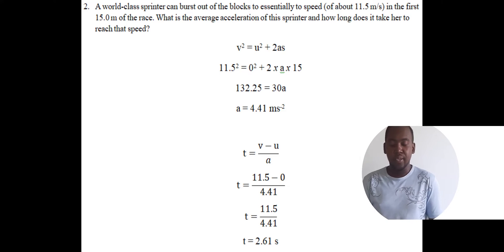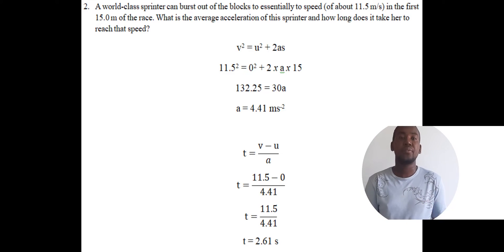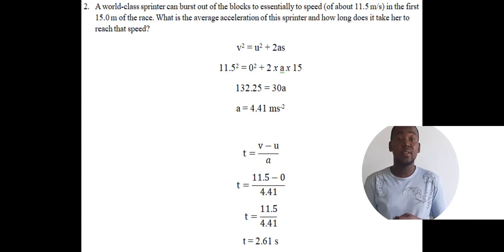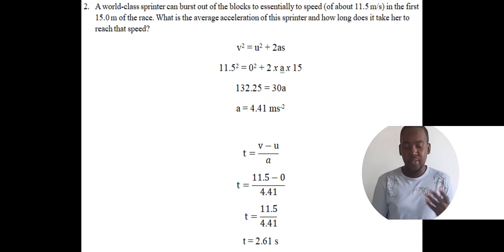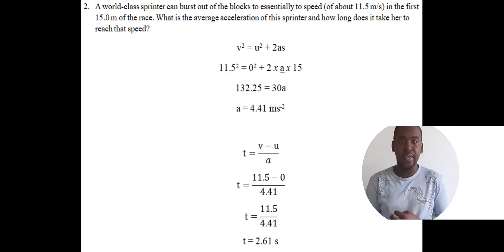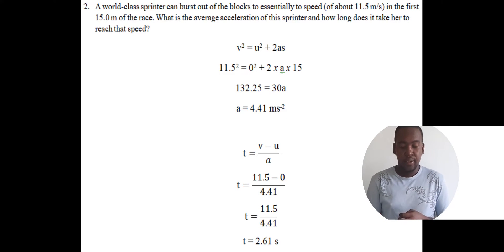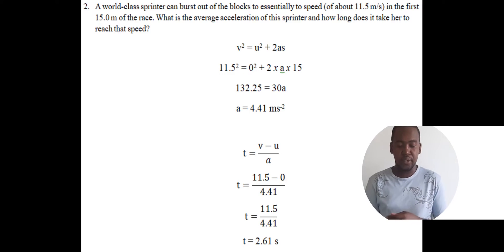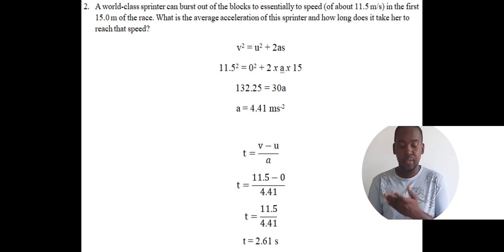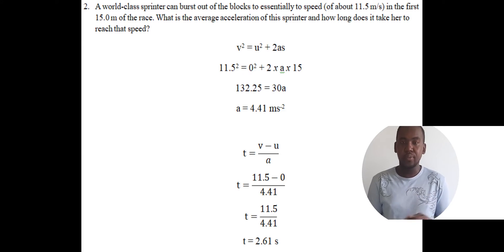So u is zero. She reached a speed of 11.5 meters per second, which is the final velocity, and the distance is 15 meters. We have u, v, and s, so we use v squared equals u squared plus 2as, because we don't have time. So v is 11.5 squared equals 0 squared plus 2a times 15. We get 30a equals 132.25, divide both sides by 30, and we get 4.41 meters per second squared.